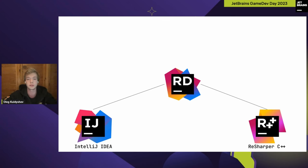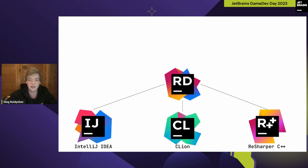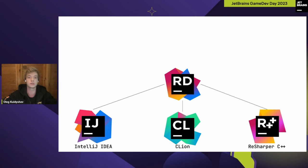Yet another dependency of Rider is CLion — another JetBrains product. Rider inherits its C++ debugger from CLion. This debugger is based on open-source LLDB and is developed mostly by the CLion team, but in Rider we manually test it and fix issues directly related to debugging Unreal Engine or C++ projects ourselves. It's worth mentioning that debugger behavior is really different across different operating systems.